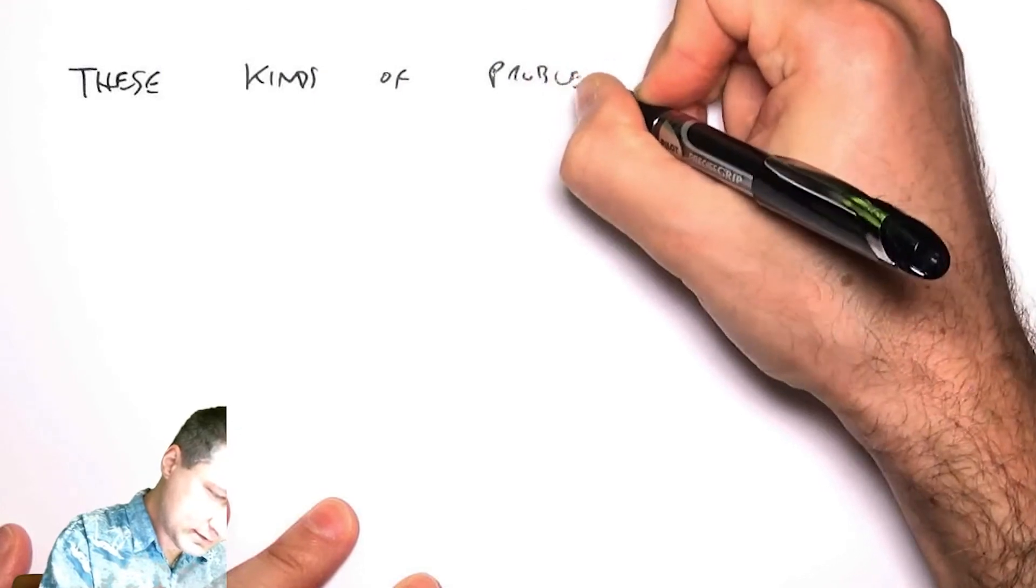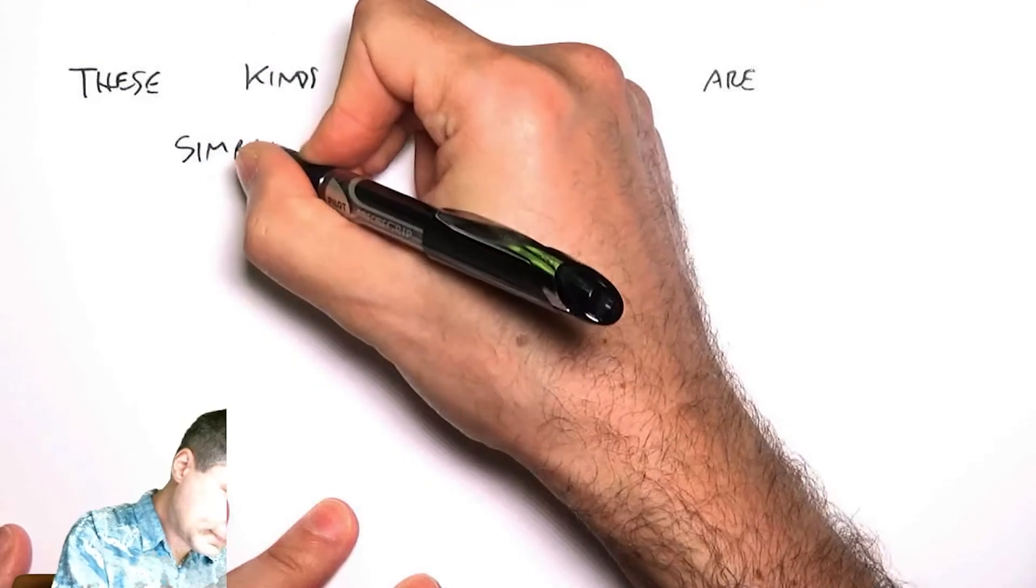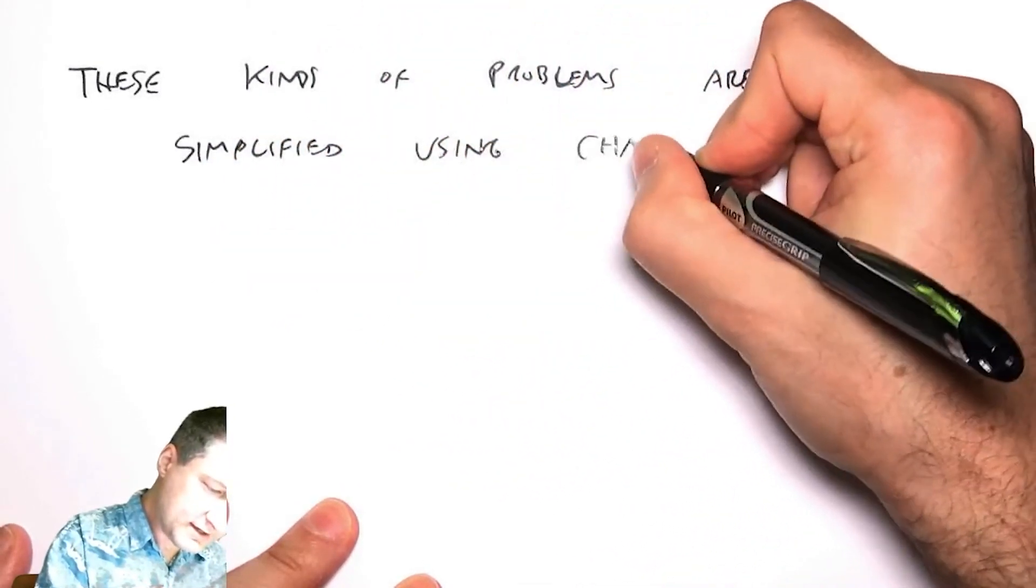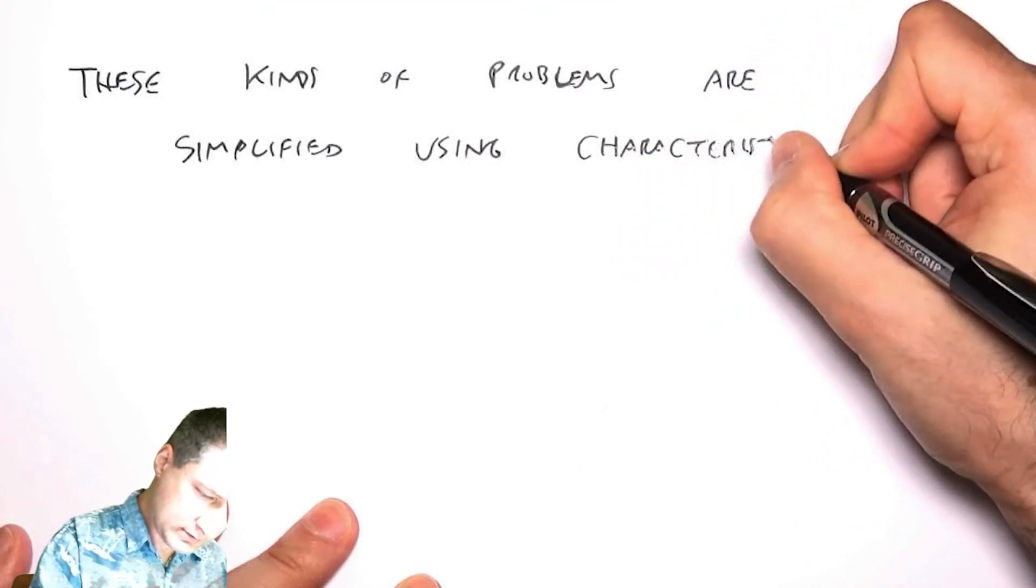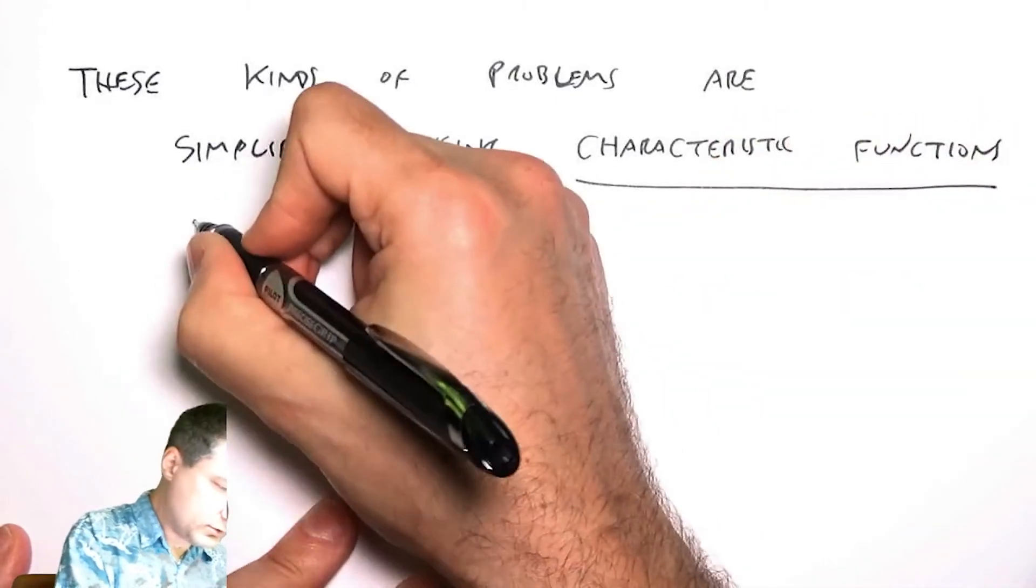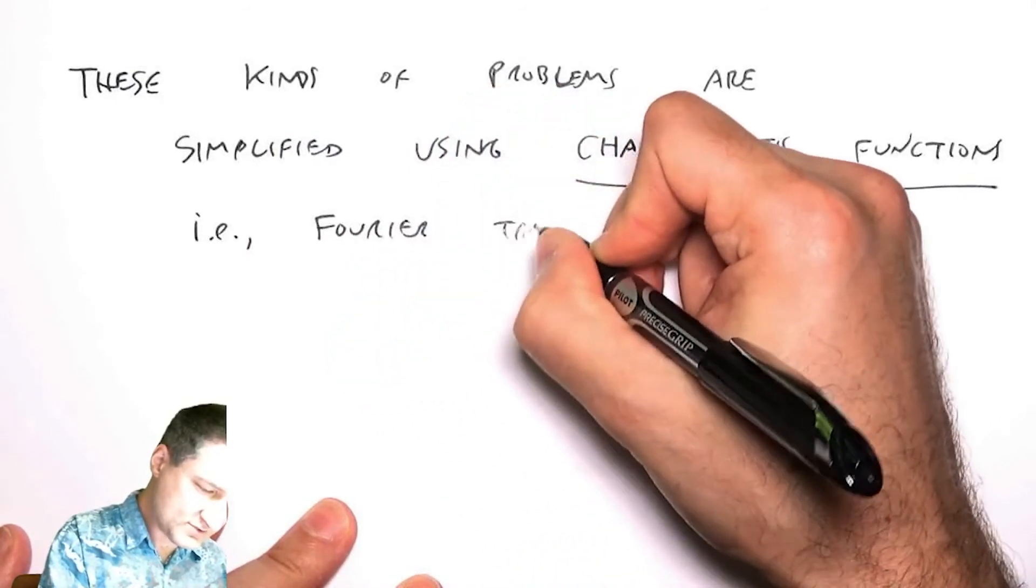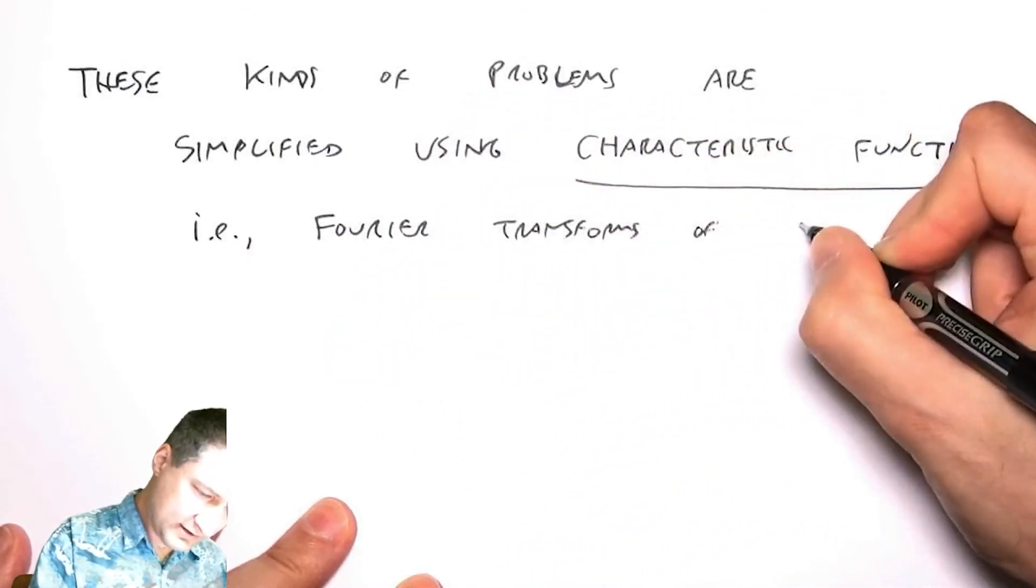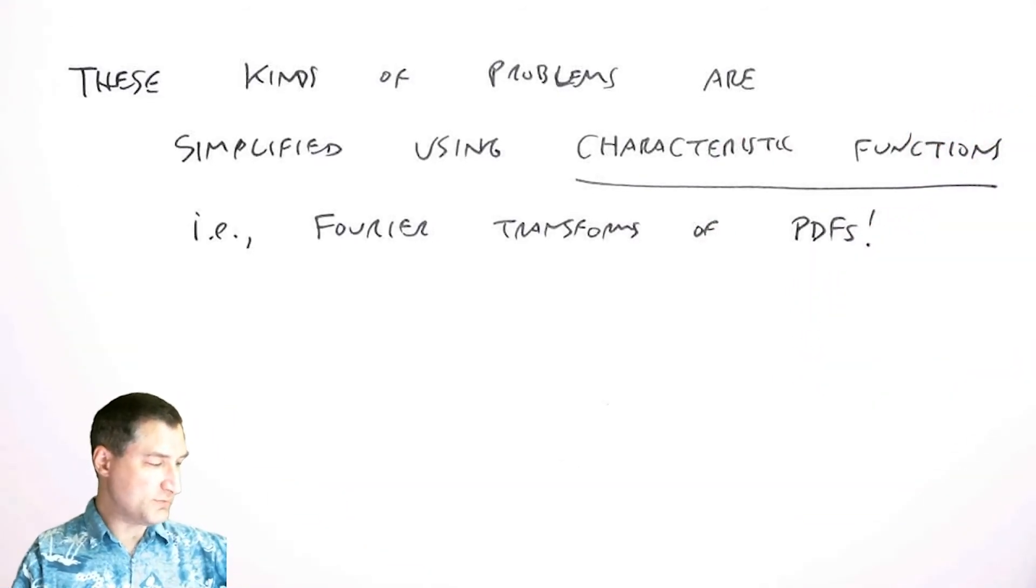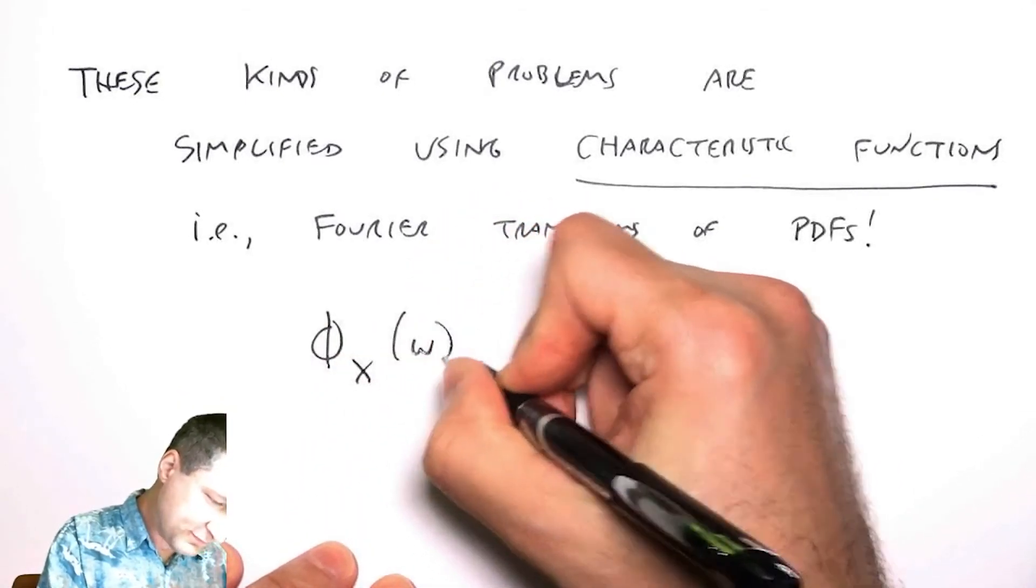Are simplified using what are called characteristic functions, which is a fancy word for saying basically Fourier transforms of the PDFs. I don't want to talk about this too much. Just to give you a shorthand, we define the Fourier transform.